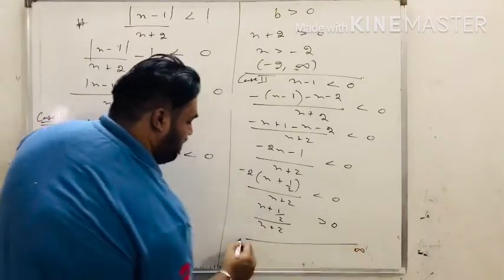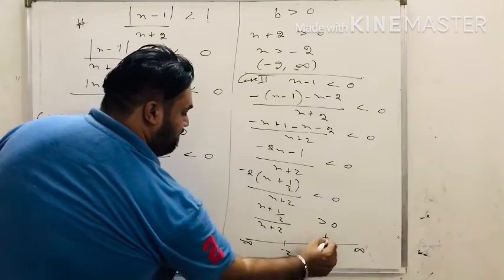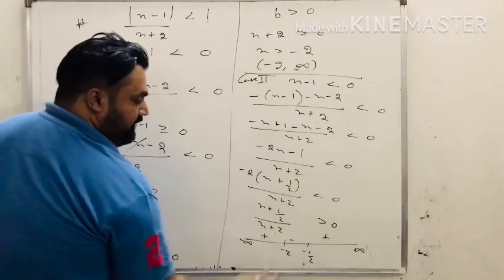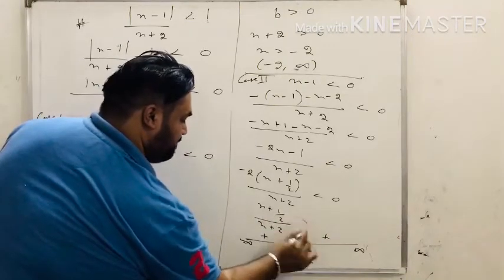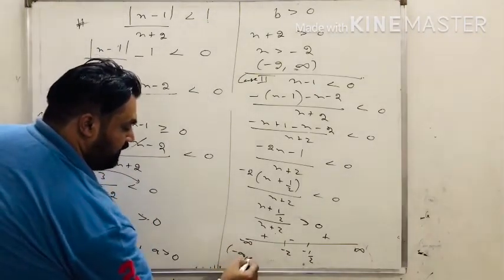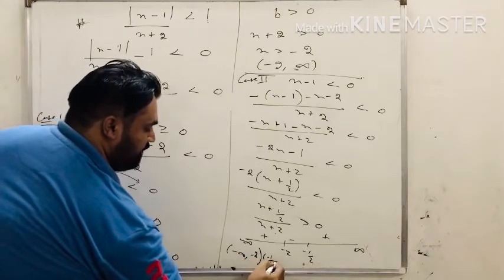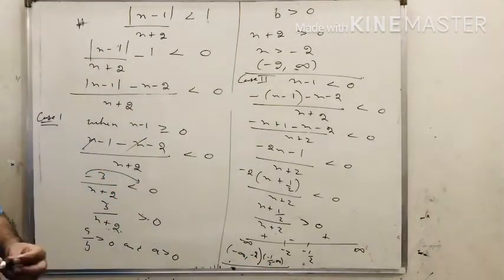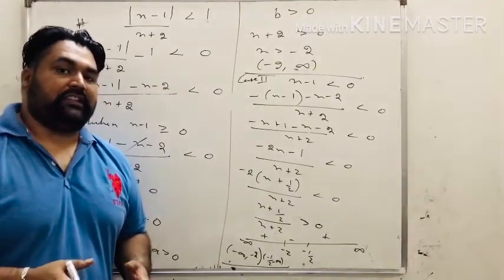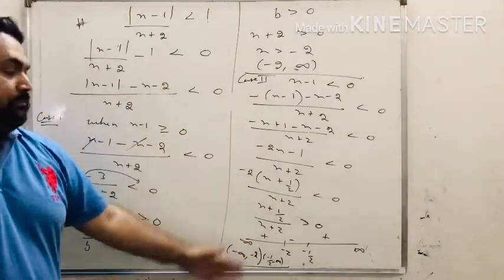Finding critical points: minus 2 and minus 1/2. Sign pattern is plus minus plus. Since the sign is greater than, we select the positive parts: minus infinity to minus 2 and minus 1/2 to infinity. Please revise the previous lectures carefully — this is the a upon b form. We split into two cases when x minus 1 is greater than 0 and when x minus 1 is less than 0.